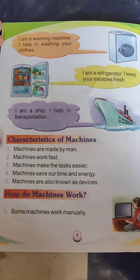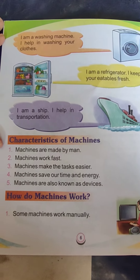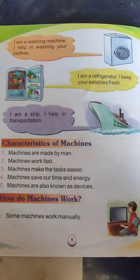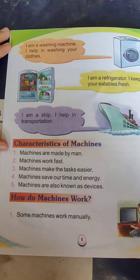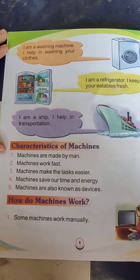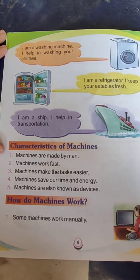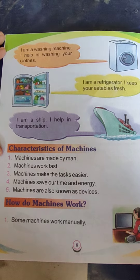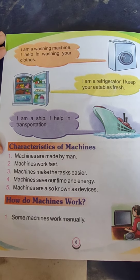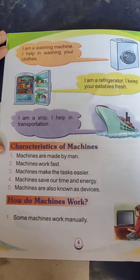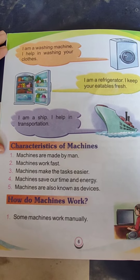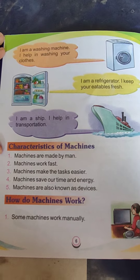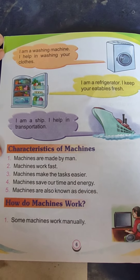Here are some characteristics of machines. Number one: machines are made by man. Number two: machines work fast. Number three: machines make tasks easier. Number four: machines save your time and energy. Number five: machines are also known as devices.